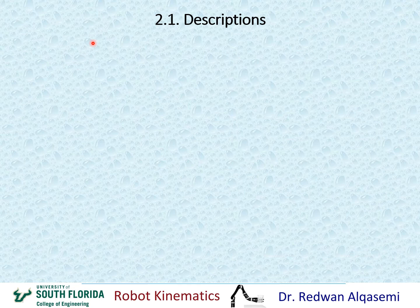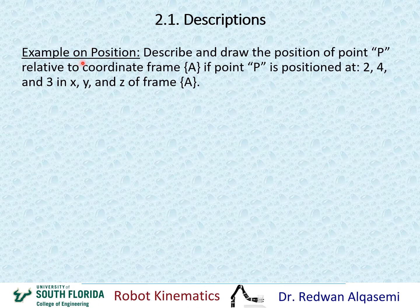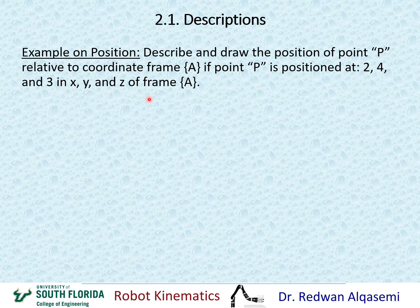Let's take an example on position. Describe and draw the position of point P relative to coordinate frame A — we always put coordinate frames in curly brackets — where point P is positioned at 2, 4, and 3 units in X, Y, and Z of frame A.